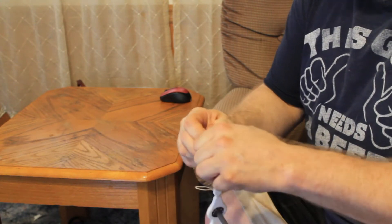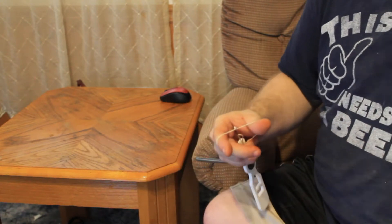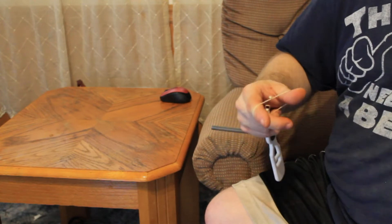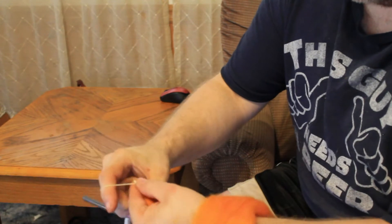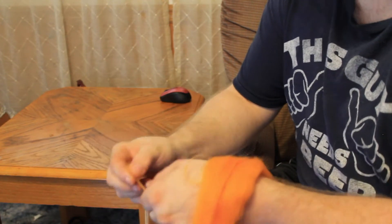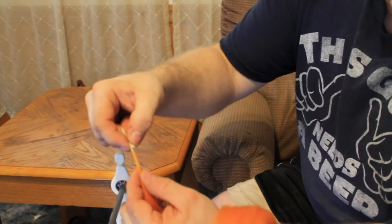So now I have a loop. I'm opening up the loop, got some roving here. I'm just going to draft out a little bit of the roving, tuck it through the loop, and double it over on itself. So it's doubled up on itself there.